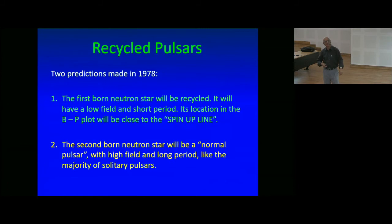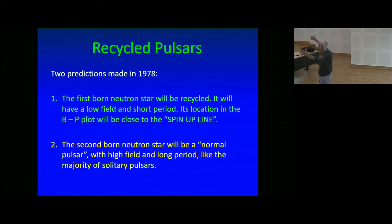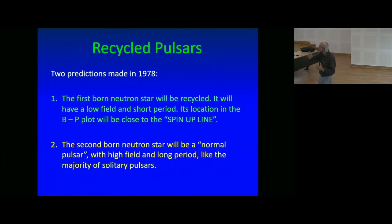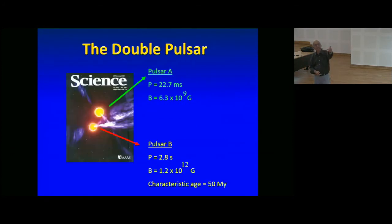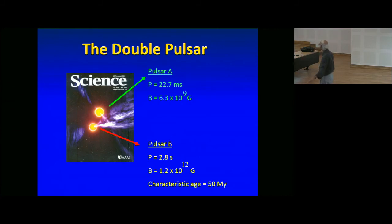A secondary prediction: the first-born neutron star undergoes all this exotic recycling, but the second-born neutron star will be just like any ordinary pulsar—high field, long period—because when it was born, the companion had already become a neutron star and nothing can spin it up. This prediction from 1978 was confirmed by the double pulsar: one pulsar spinning at 22 milliseconds with field 10⁹ Gauss (recycled), and the other spinning with a period of 3 seconds with a very high magnetic field (ordinary).